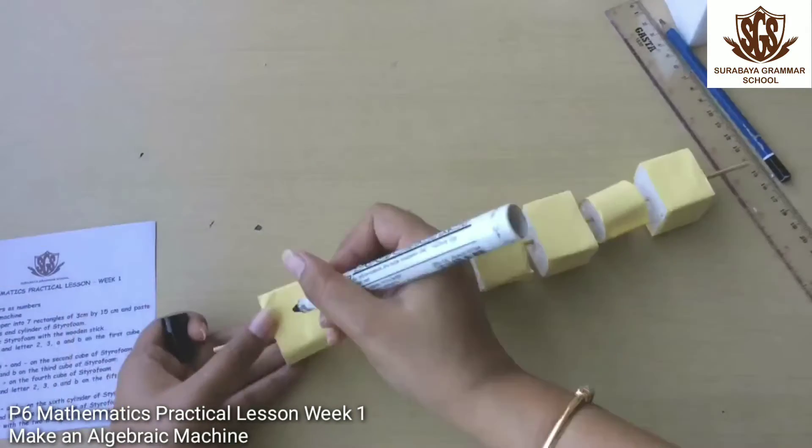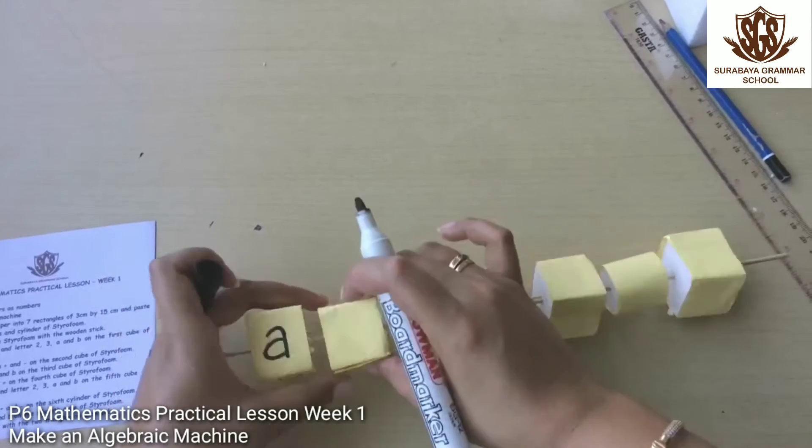Write number and letter 2, 3, A, and B on the first cube of styrofoam.